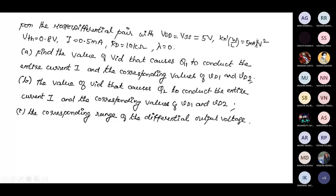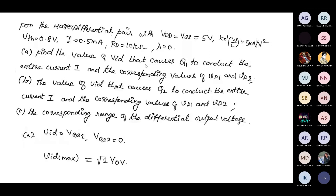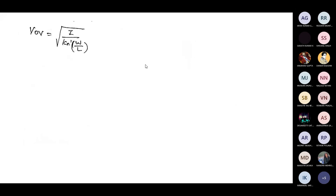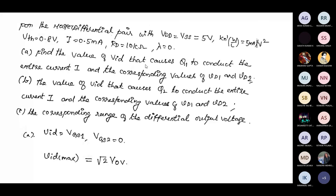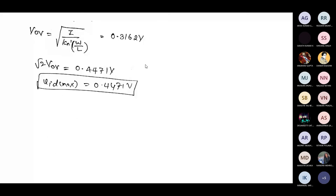We need to find the range of the differential input voltage Vid, which lies between minus root 2 times overdrive and plus root 2 times overdrive. First, calculate the overdrive voltage, which is 0.316 volts. Then calculate Vid max using root 2 times overdrive voltage, giving Vid max equal to 0.4471 volts.